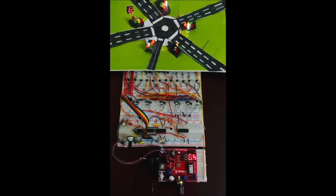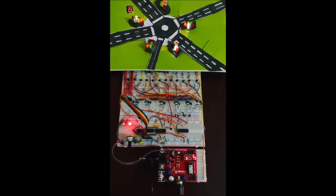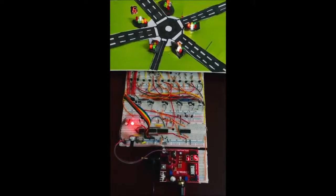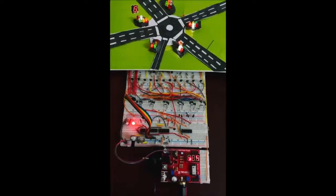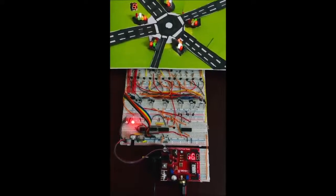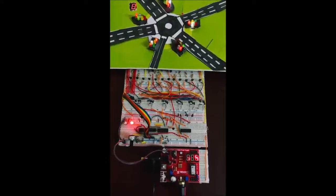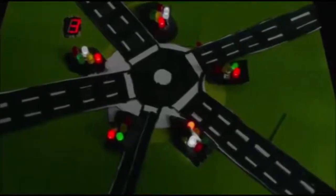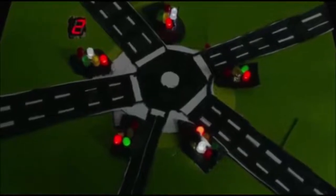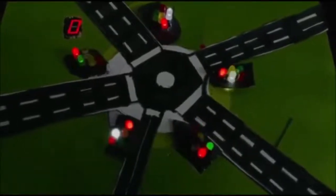And we can also see a countdown timer on the top left corner, which is basically counting down for the green signal for the road that is just underneath the countdown timer. So let's have a closer look at the model itself to better understand if the lights are behaving correctly or not.